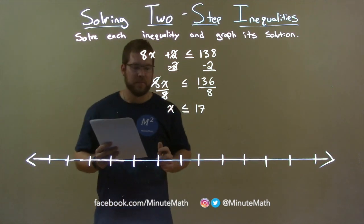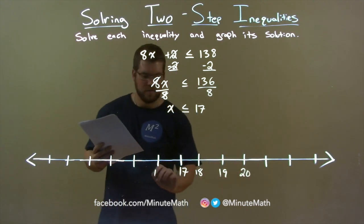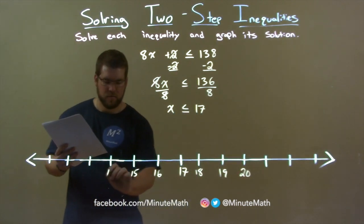So now let's graph it. Put a 17 here, 18, 19, 20, and 16, 15, 14.